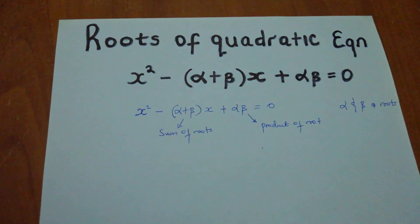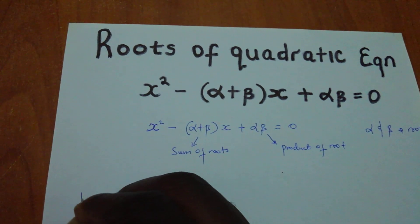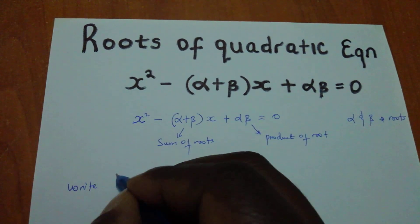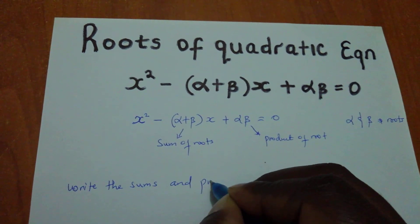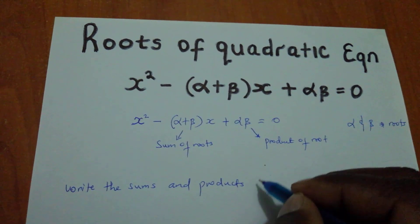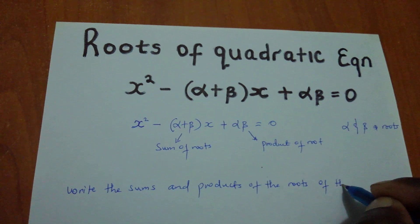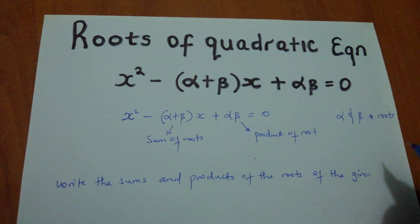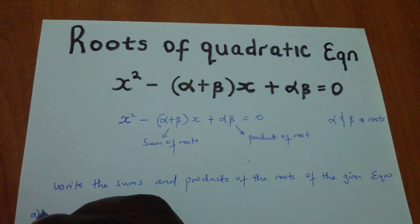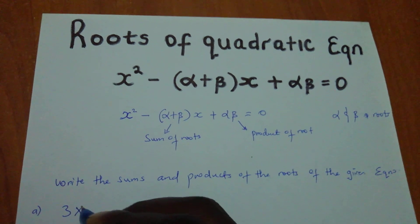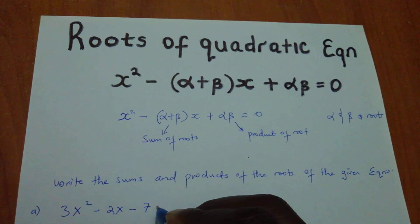Let me give examples which will be very easy for you to understand. What if they say write the sums and products of the roots of the given equations? Suppose we have this equation which says 3x squared minus 2x minus 7 is equal to 0.